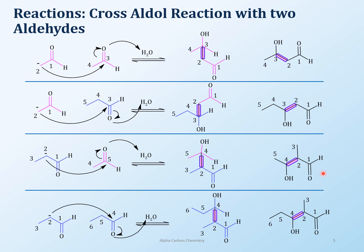So the question becomes: how do you control that? We don't want four products. If you wanted a specific product — say, ethanal reacting with propanal to give only one product — how do you prevent the others from forming? This is something I'd like you to think about and email me the answer. You should be able to control the reaction and get the product you want. That's the whole point of being a chemist.